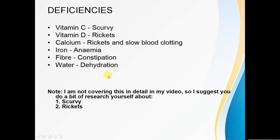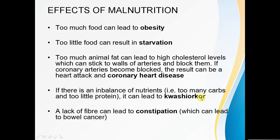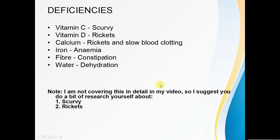You need to know about deficiencies. If you're vitamin C deficient, you'll get scurvy. If you're vitamin D deficient, you'll get rickets. Calcium deficiency leads to rickets and slow blood clotting. Iron deficiency causes anaemia. Fibre deficiency leads to constipation, and water deficiency causes dehydration. I'm not covering these in much detail here, as I'd like to focus more on other human nutrition topics. If you'd like to know more, go through your textbook or search online. I want you to particularly focus on scurvy, rickets, and kwashiorkor as self-study topics.